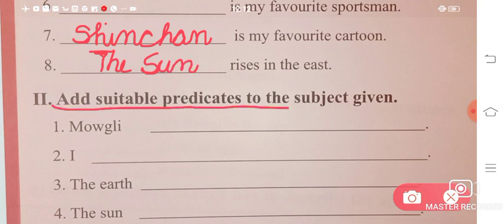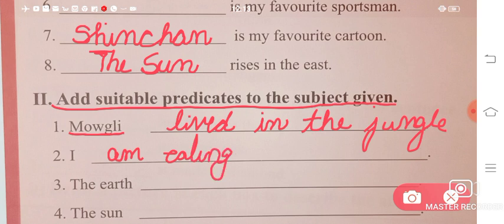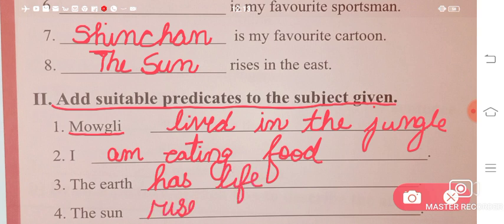Next, now add suitable predicates to the given subject. Mowgli lived in the jungle. Next is I - you have to make it according to your choice. So 'I am eating food.' Next is 'The earth has life.' People live on earth, it has life. 'The sun rises in the east' - this is the same as the one above that we copied.